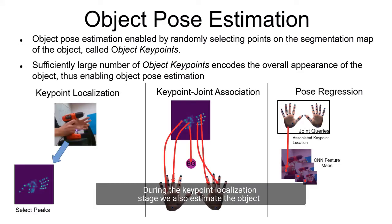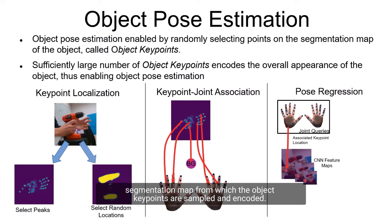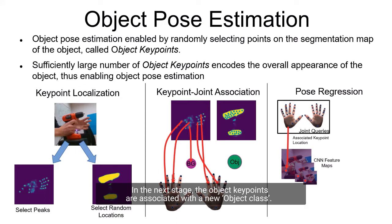During the keypoint localization stage, we also estimate the object segmentation map from which the object keypoints are sampled and encoded. In the next stage, the object keypoints are associated with a new object class. This makes the keypoints identity aware.